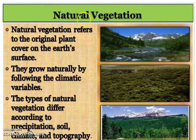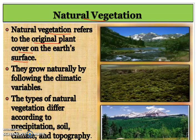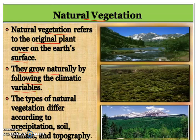What is Natural Vegetation? Natural Vegetation refers to the original plant cover on the earth's surface. Such type of vegetation has not been modified or changed by human beings. They grow naturally, meaning there is no role of human beings in the growth of Natural Vegetation.